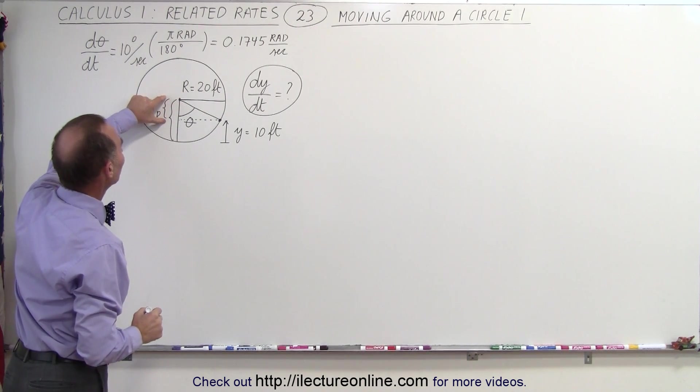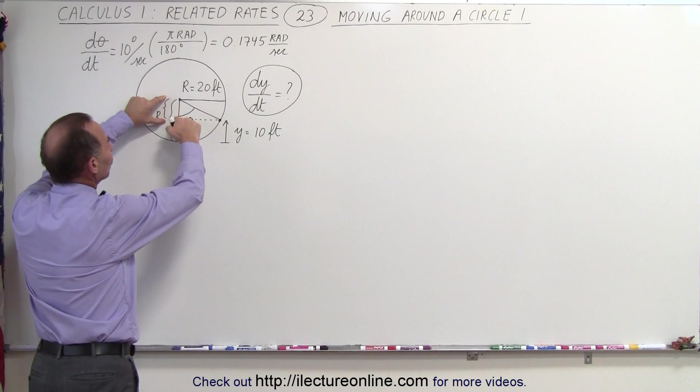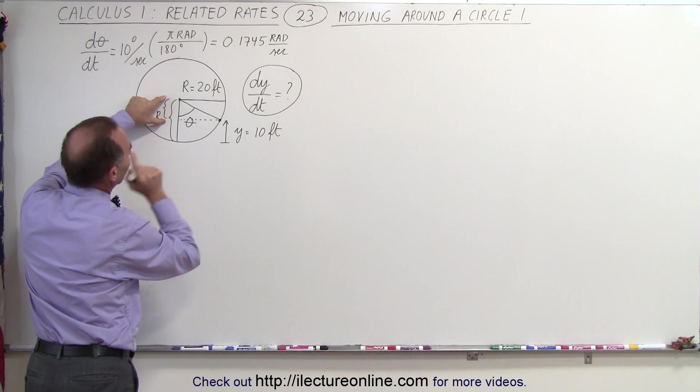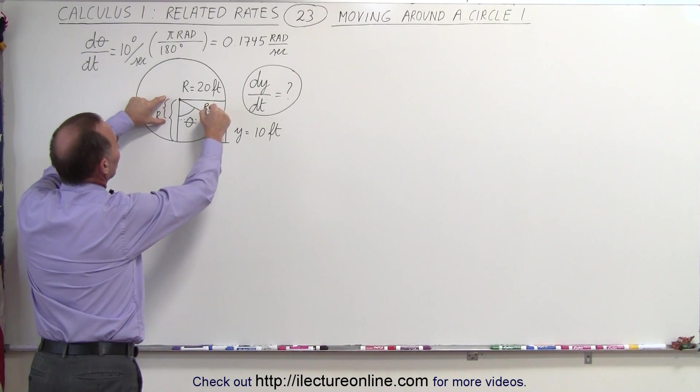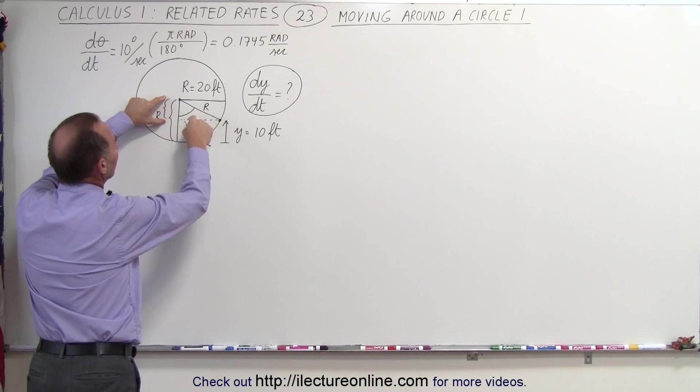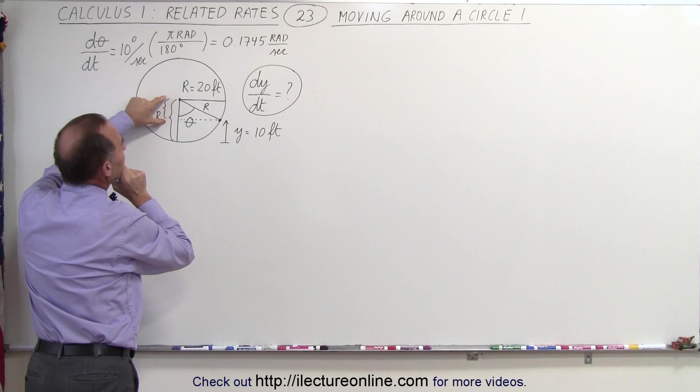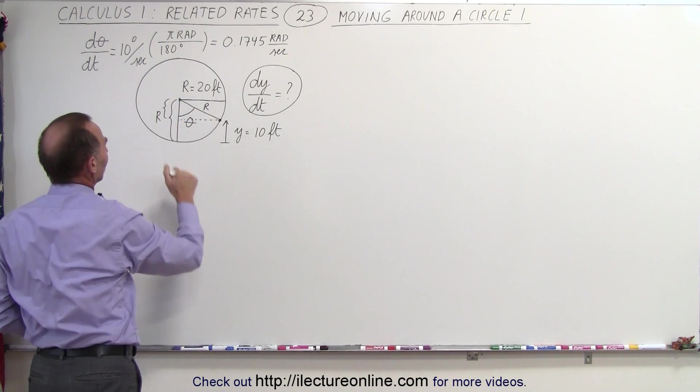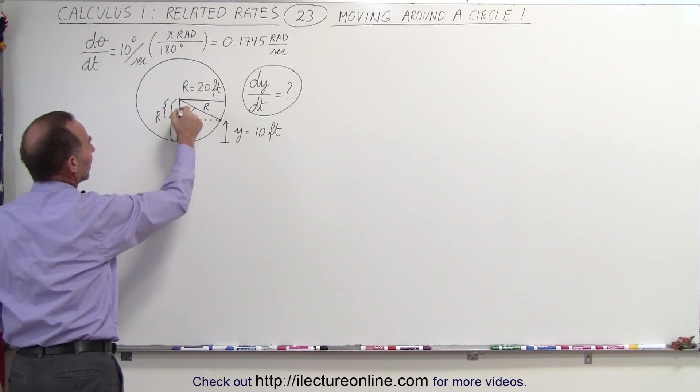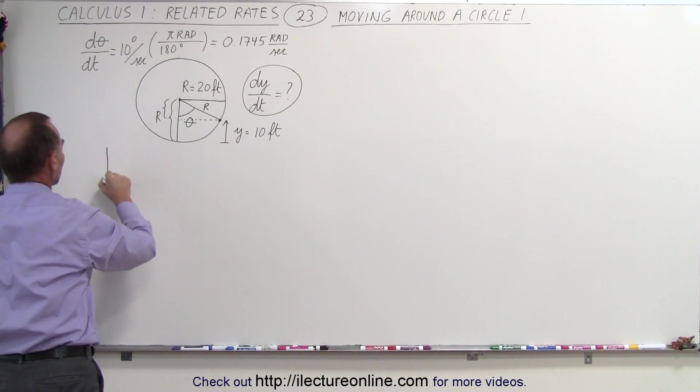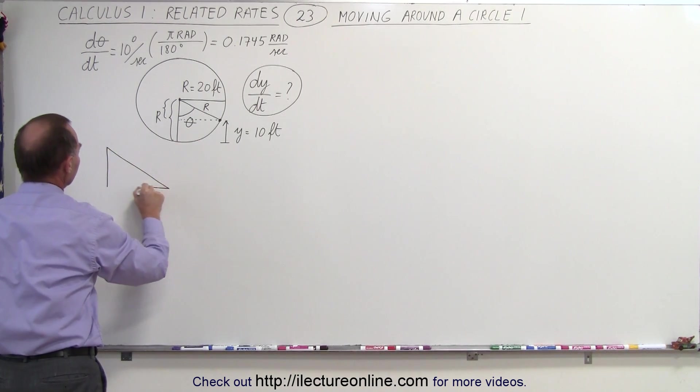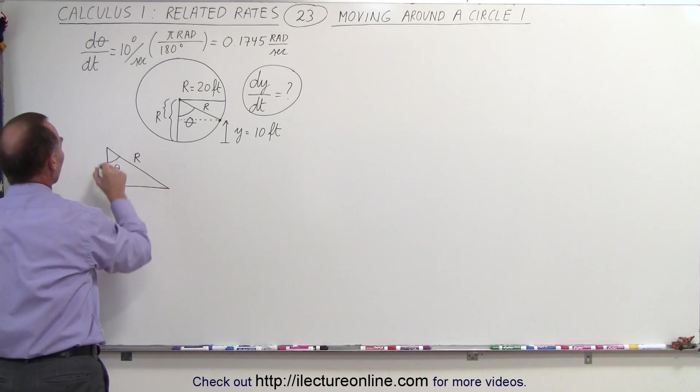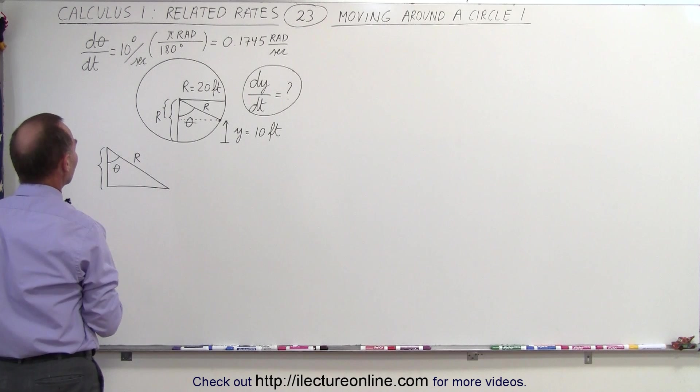So this distance can be found by relating things on this triangle right here. Notice that we have the hypotenuse which is r, we have the angle which is theta, and we can find the adjacent side. So I'm going to redraw this triangle right here on the side. So there's a triangle we're dealing with. Here's the angle theta, here's the hypotenuse r.